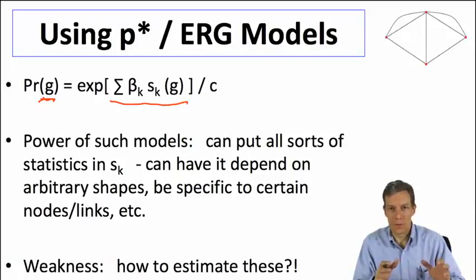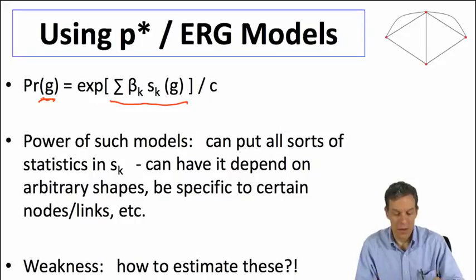We can put in all kinds of different statistics. You can keep track of how many triangles are there so we can capture clustering, average path lengths, and all kinds of other statistics. It's very flexible and very general in its formulation. Also the exponential form is a nice one in terms of the mathematics behind it. The difficulty is going to be in estimating these things.